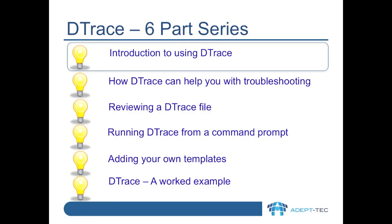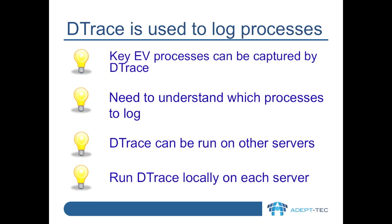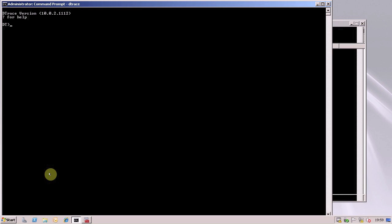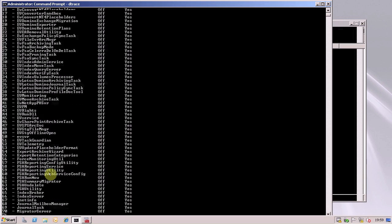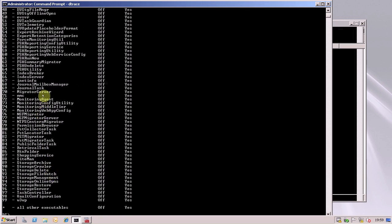In this video series we'll show you some of the power of the Enterprise Vault DTrace utility. In this first video we will introduce DTrace. Key Enterprise Vault processes can be captured by DTrace and you need to understand which processes to log. DTrace can be run on other servers too — when you run DTrace you run it locally on each server. Here we see DTrace running in a command prompt and we'll see more of that in future videos.